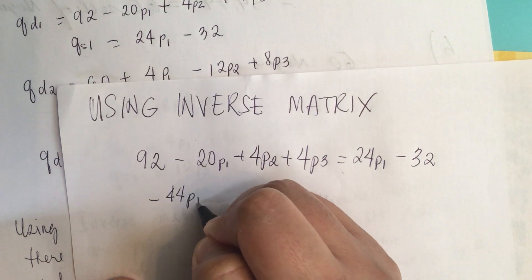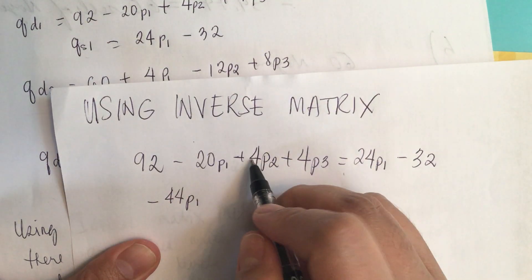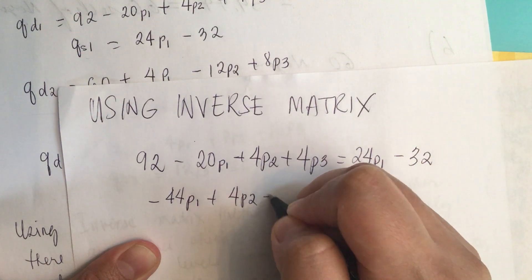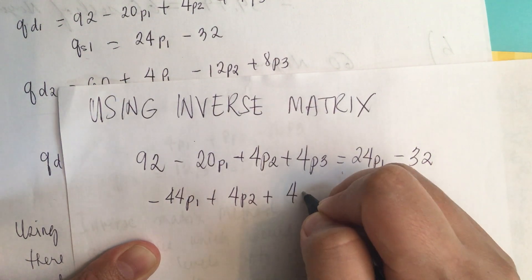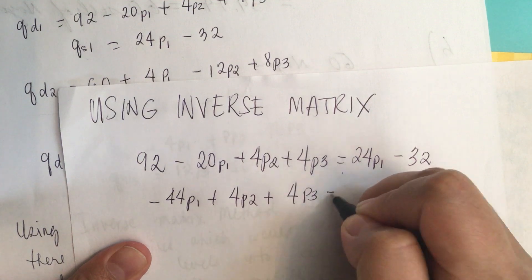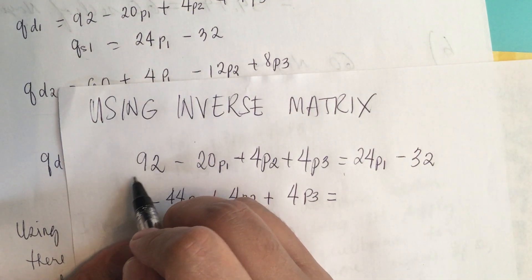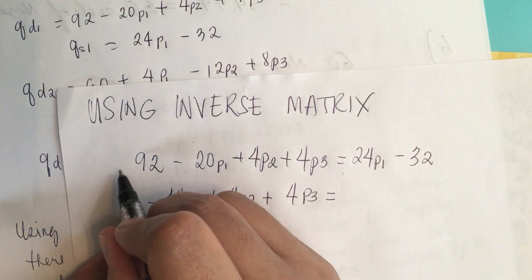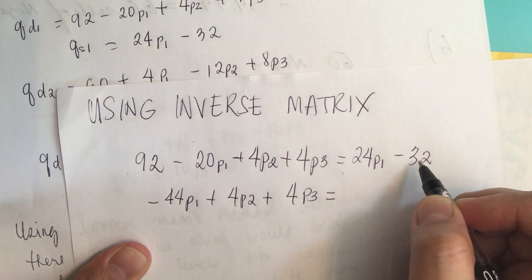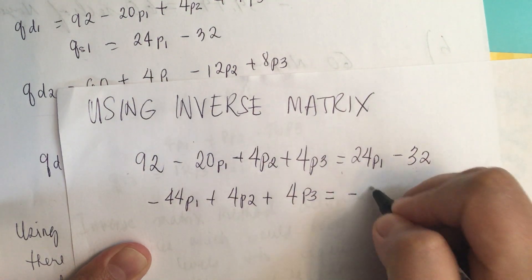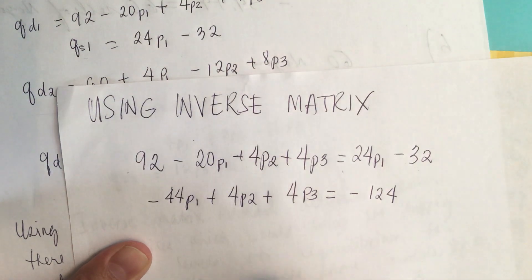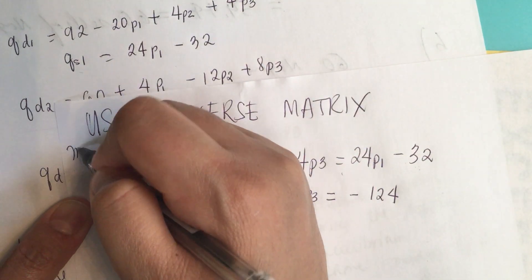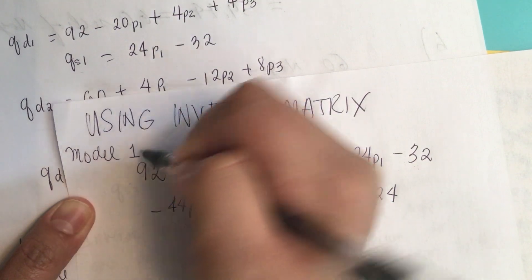Continuing the rearrangement for model one, we have minus 44p1 plus 4p2 plus 4p3 equals minus 92 minus 32, which is minus 124. This is the equilibrium equation for model one, where demand equals supply.